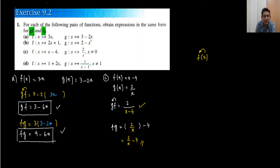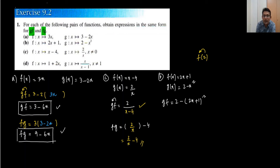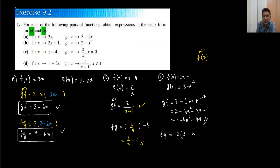Part b: f(x) = 2x + 1 and g(x) = 2 - x². We need to find gf first. Substituting f into g: 2 - (2x + 1)² = 2 - (4x² + 4x + 1) = 1 - 4x² - 4x. Then for fg, substituting g into f: 2(2 - x²) + 1 = 4 - 2x² + 1 = 5 - 2x².